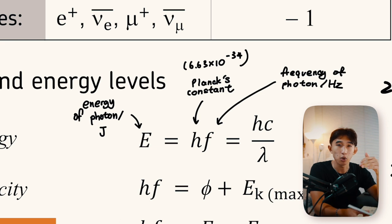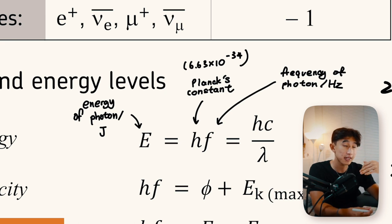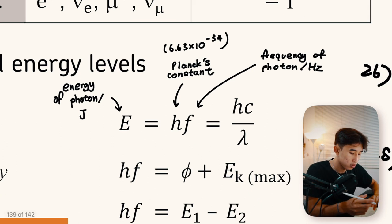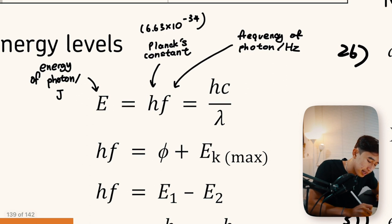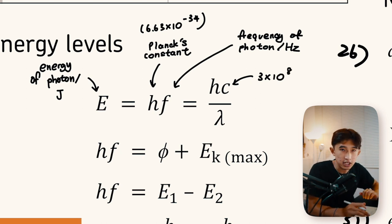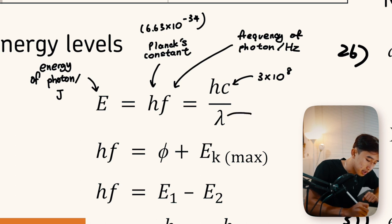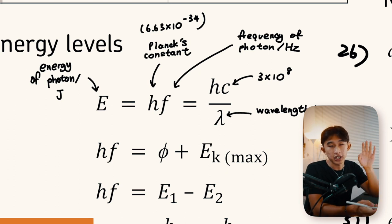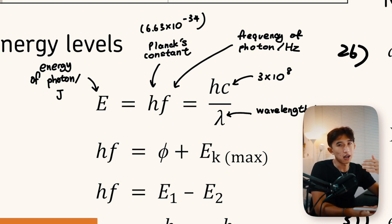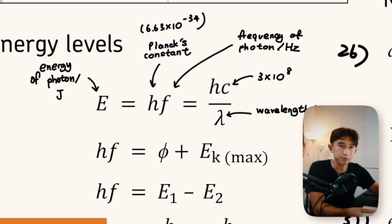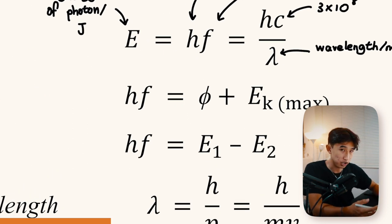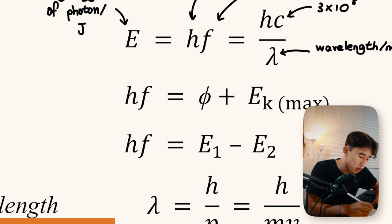If frequency is not given, you can convert using the speed of light divided by the wavelength. So you can use E = hc/λ, where h is Planck's constant, c is the speed of light (3 × 10⁸ m/s, given on page one of the data sheet), and λ is the wavelength in metres. If given wavelength instead of frequency, use E = hc/λ to find photon energy.